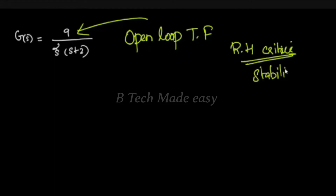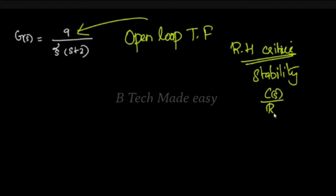In the third case, we have to determine the RH criteria. There is an open loop transfer function. In the closed loop, there is C(s) by R(s). Now, here is the first one — we are going to have a closed loop system.